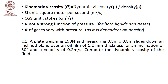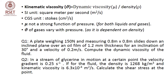Now we will go through some problems on dynamic viscosity and kinematic viscosity. First question: A plate weighing 150 N measuring 0.8 m × 0.8 m slides down an inclined plane over an oil film of 1.2 mm thickness at an inclination of 30° and a velocity of 0.2 m/s. Compute the dynamic viscosity of the fluid. Second question: In a stream of glycerin, the velocity gradient at a certain point is 0.25 s⁻¹. If density is 1268 kg/m³ and kinematic viscosity is 6.3×10⁻⁴ m²/s, calculate the shear stress at that point.